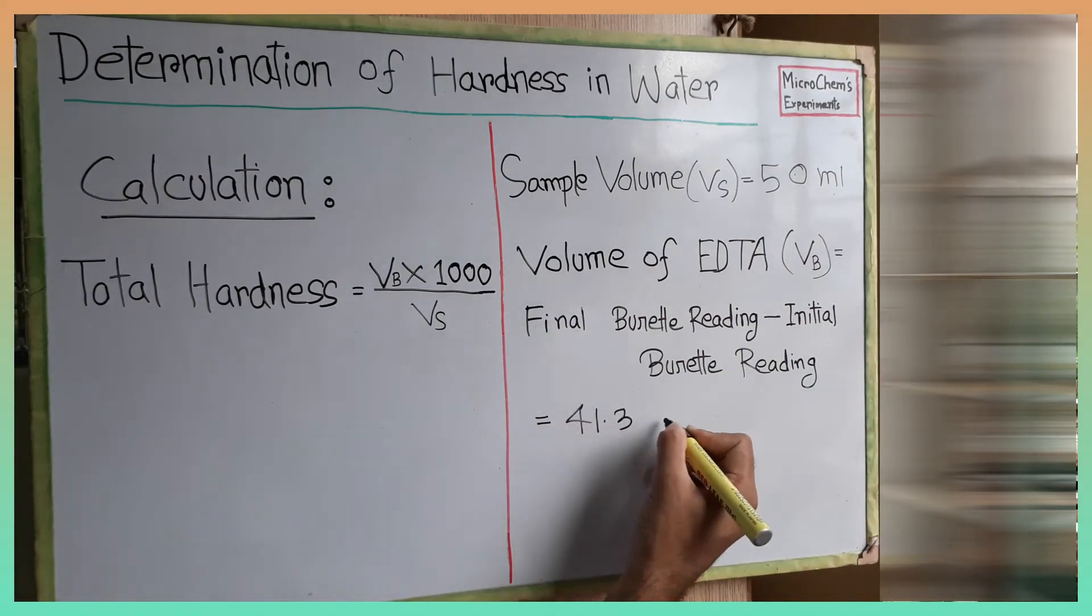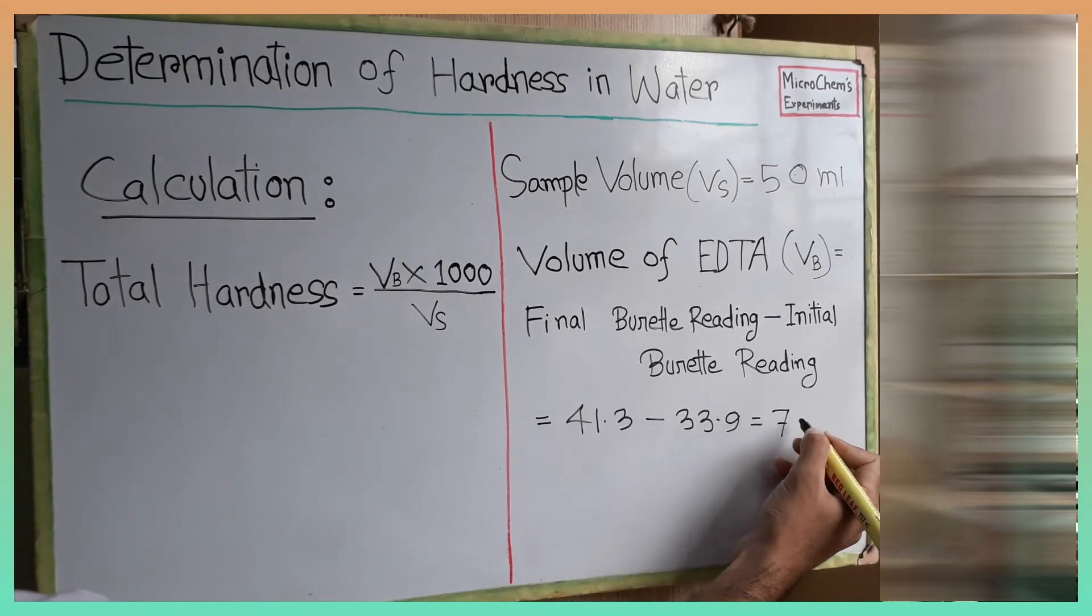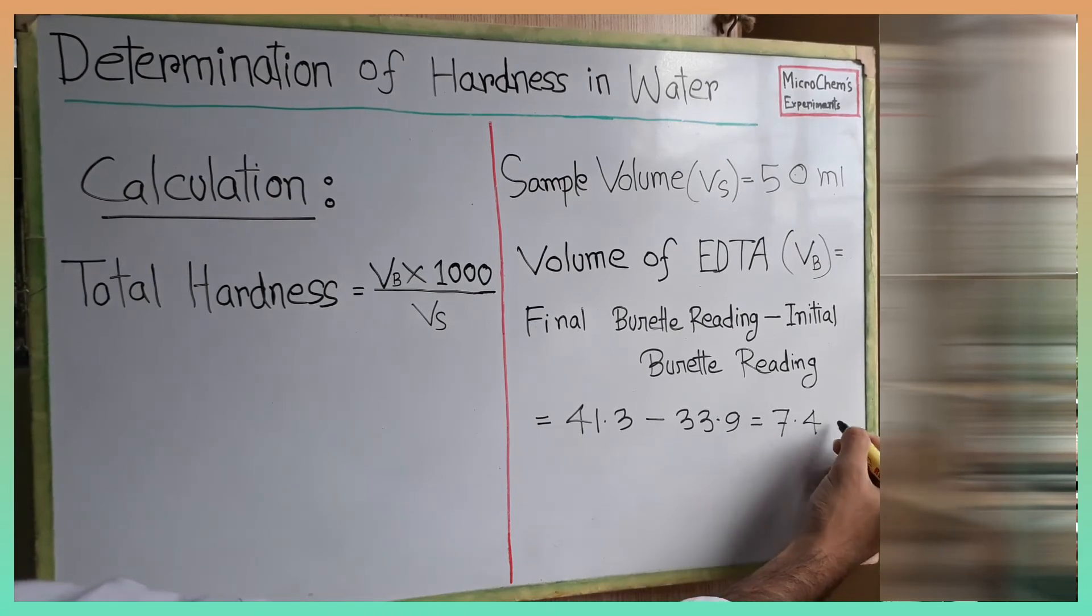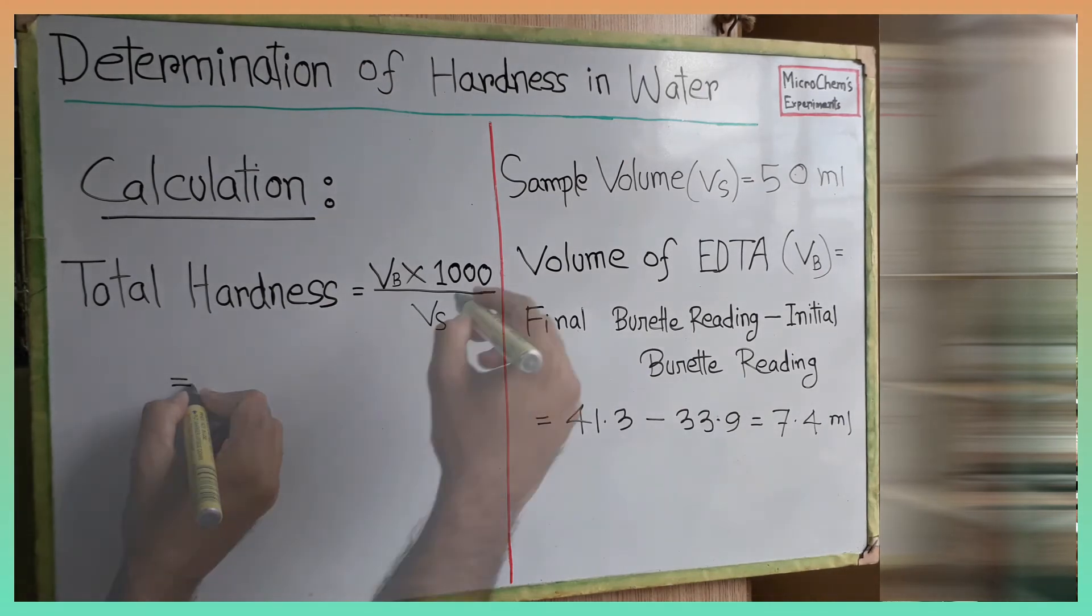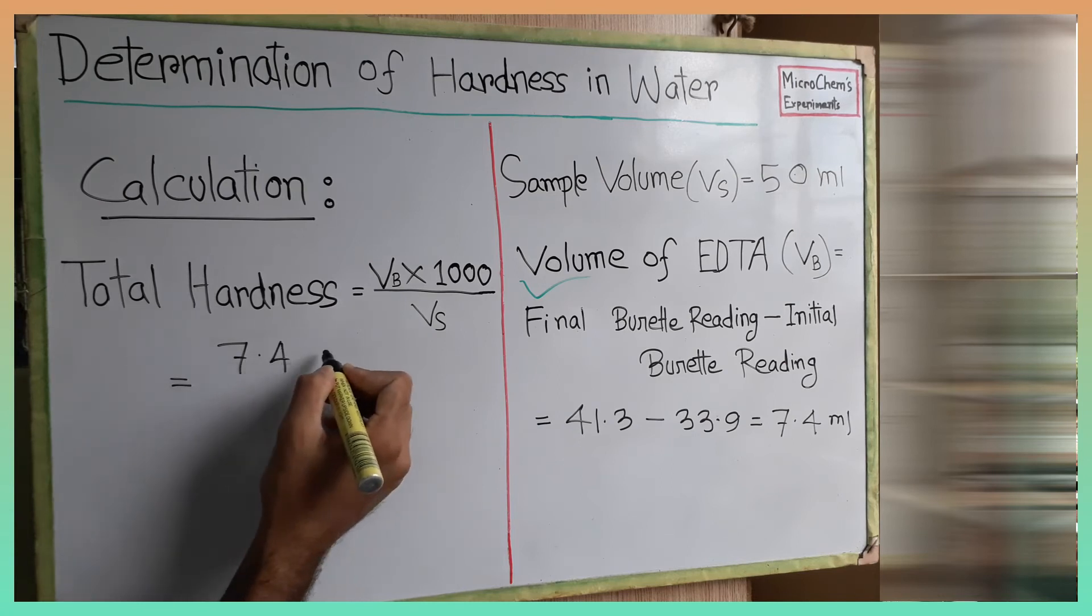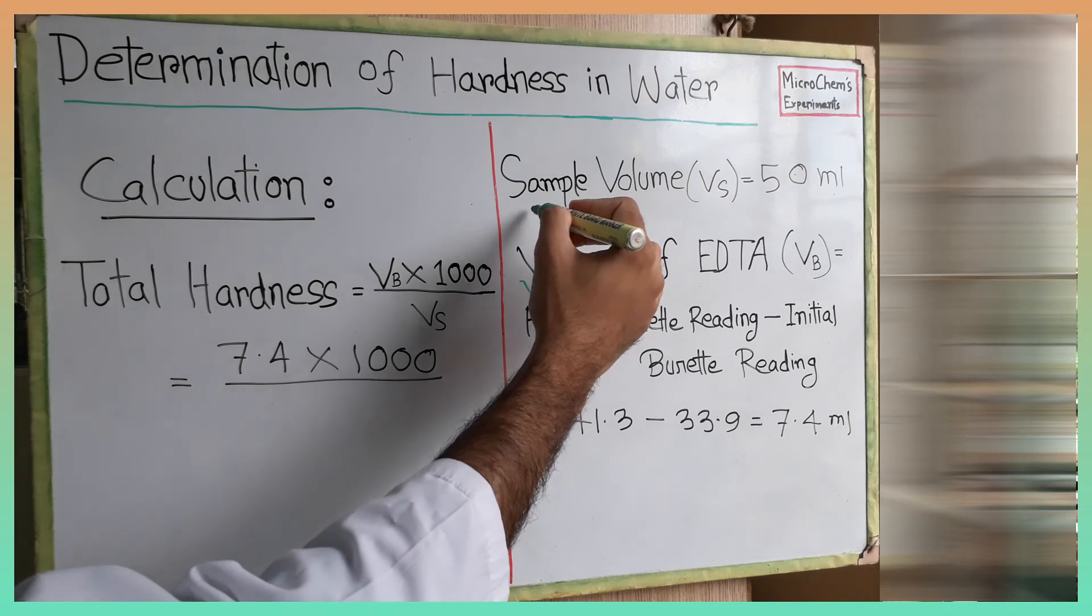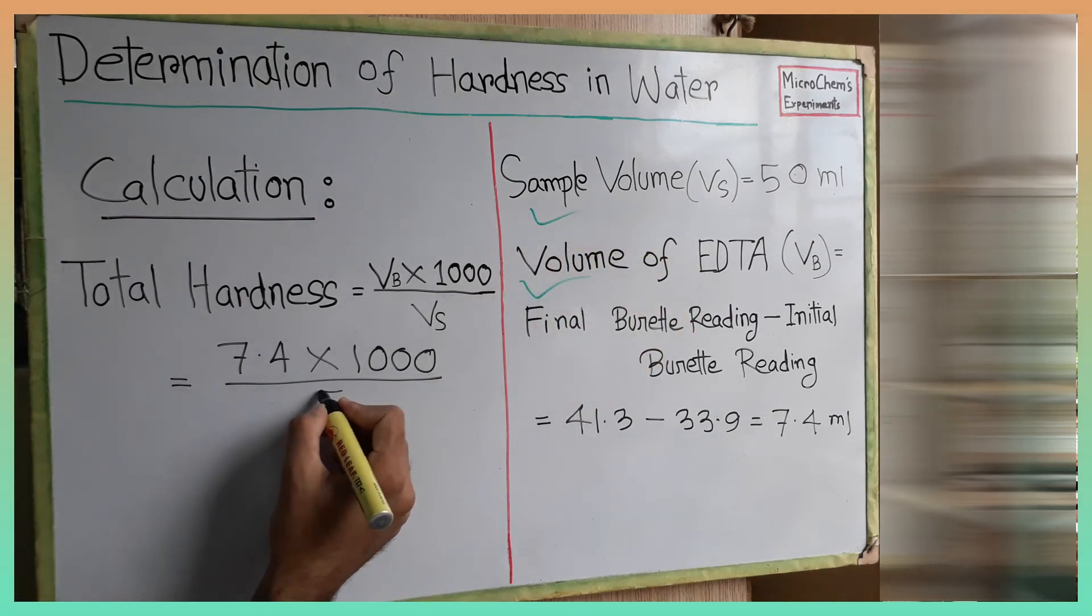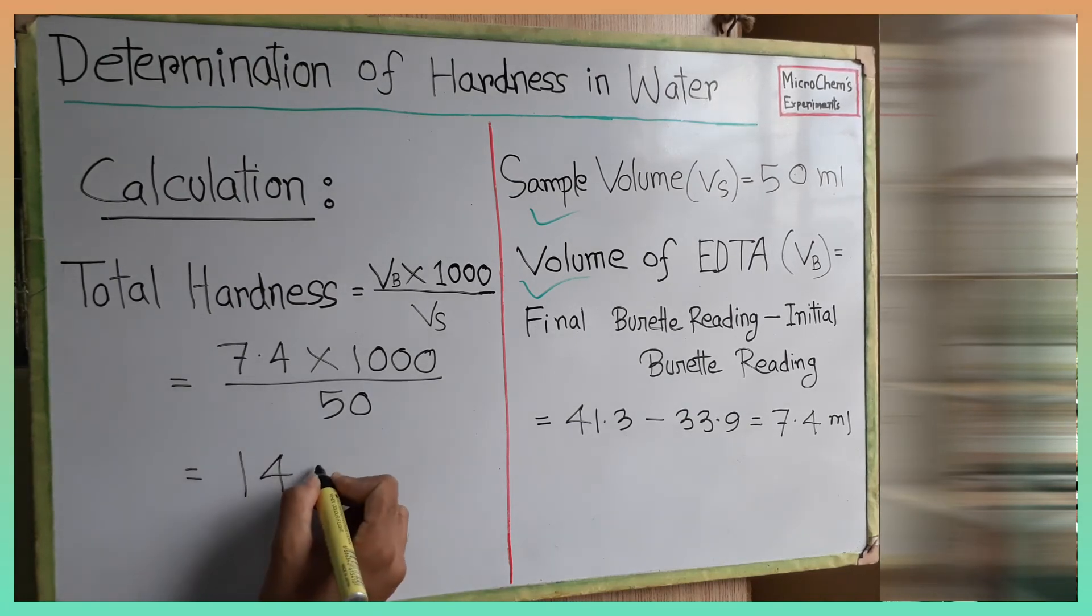We can get the volume of EDTA by subtracting initial burette reading from the final reading, which is 7.4 ml. Now put these values in the equation. By solving the equation, we get total hardness of our sample is 148 mg per liter.